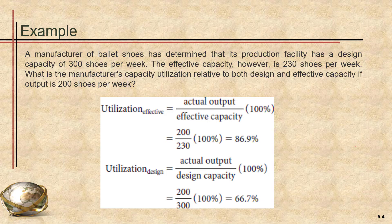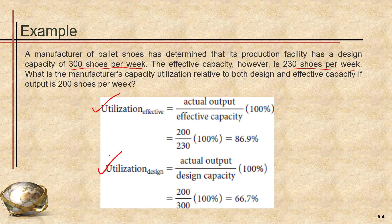Let's take another example. Here we have a manufacturing facility for ballet shoes. Their design capacity is 300 shoes per week, and their effective capacity is 230 shoes due to certain allowances. The actual output is 200 shoes per week. We can simply calculate the efficiency and the utilization from these values.